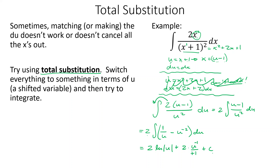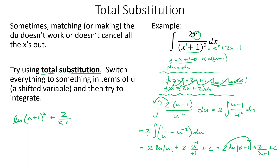Now we go back to x's. u was x plus 1, so we get 2 times the natural log of |x plus 1| plus 2 over (x plus 1) plus c. We can also bring the 2 inside the log as an exponent — giving natural log of (x plus 1) squared plus 2 over (x plus 1) plus c, and since it's squared we no longer need the absolute value. This is total substitution — a nice trick that comes up maybe once on the AP exam. It usually applies when the degrees on top and bottom are the same.